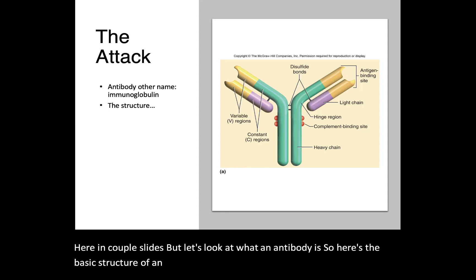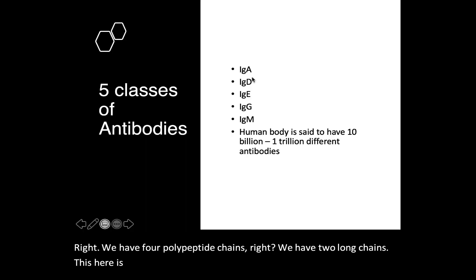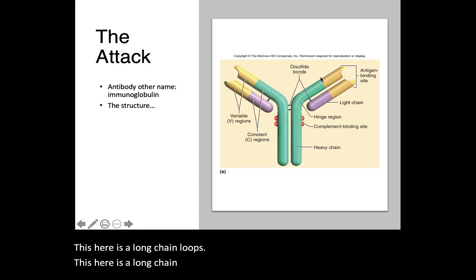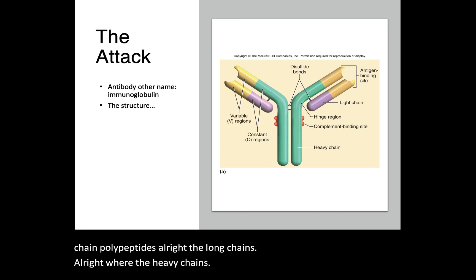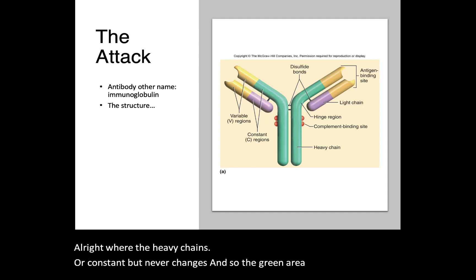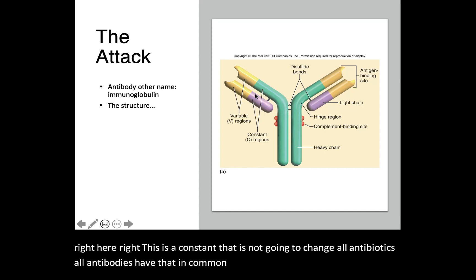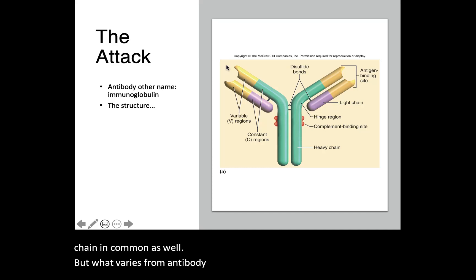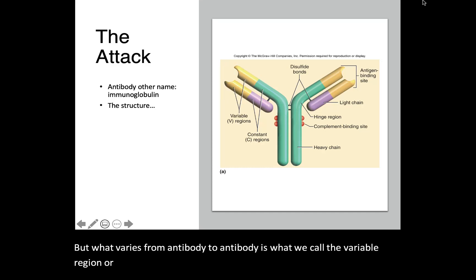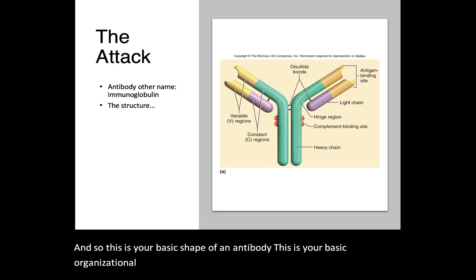Here is the basic structure of an antibody. We have four polypeptide chains: two long chains — which are the heavy chains — and two short chains, or light chain polypeptides. The heavy chains are constant and never change. The green area you're looking at here is constant — that does not change, and all antibodies have that in common. All antibodies have the light chain in common as well. But what varies from antibody to antibody is what we call the variable region, or the V region. This is your basic organizational structure of an antibody.